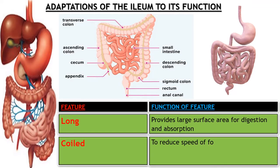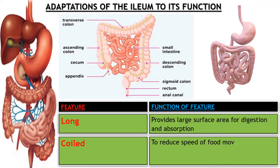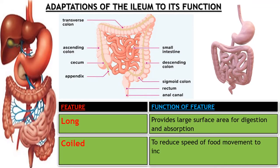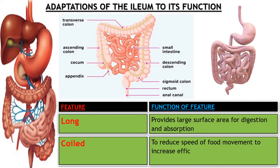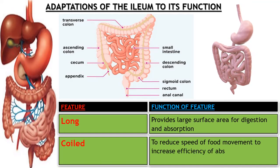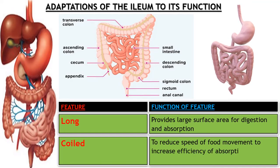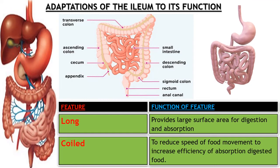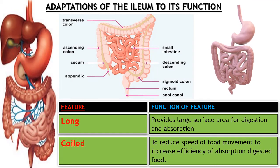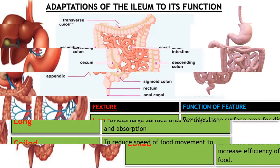Number two: the ileum is coiled. Being coiled is very necessary because it reduces the speed of movement of food, which increases the efficiency of absorption of digested products.